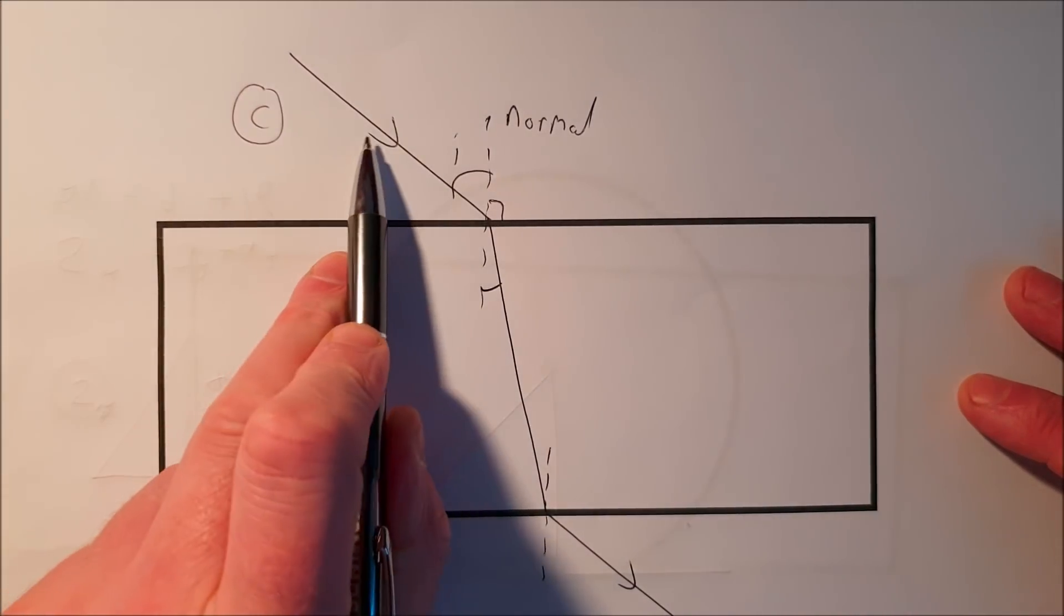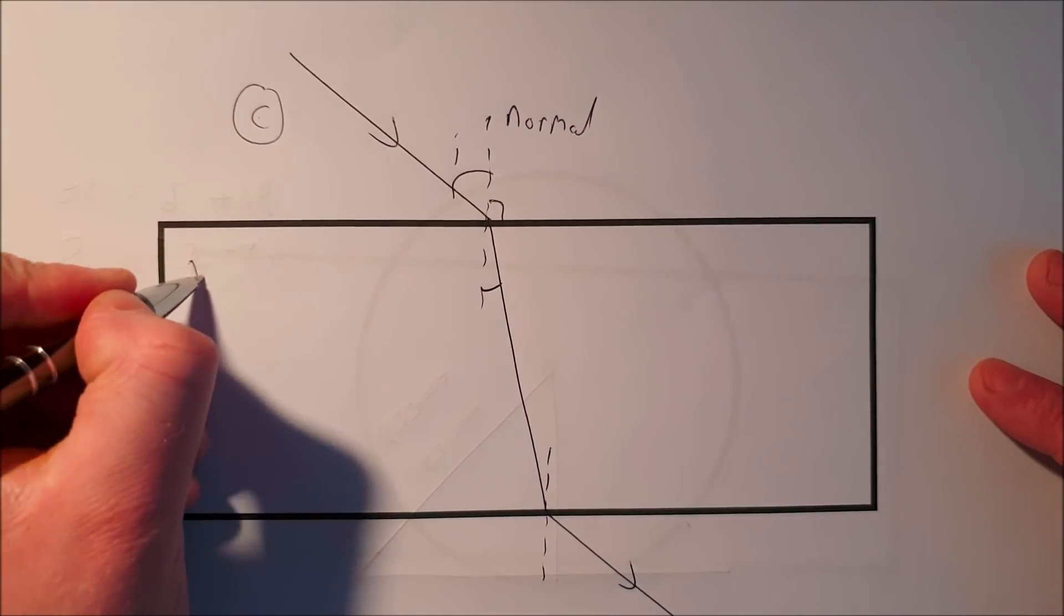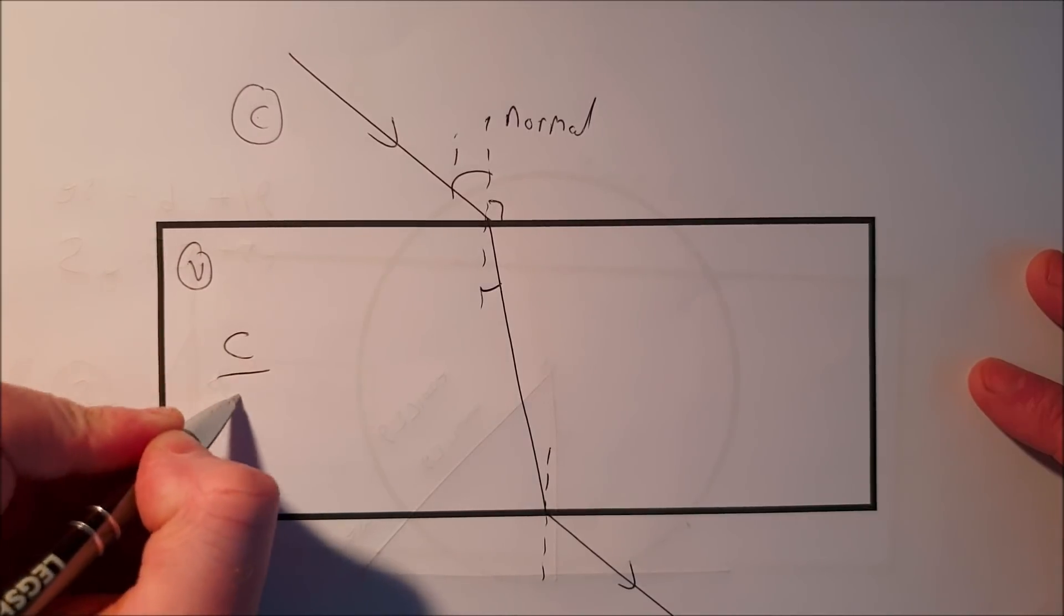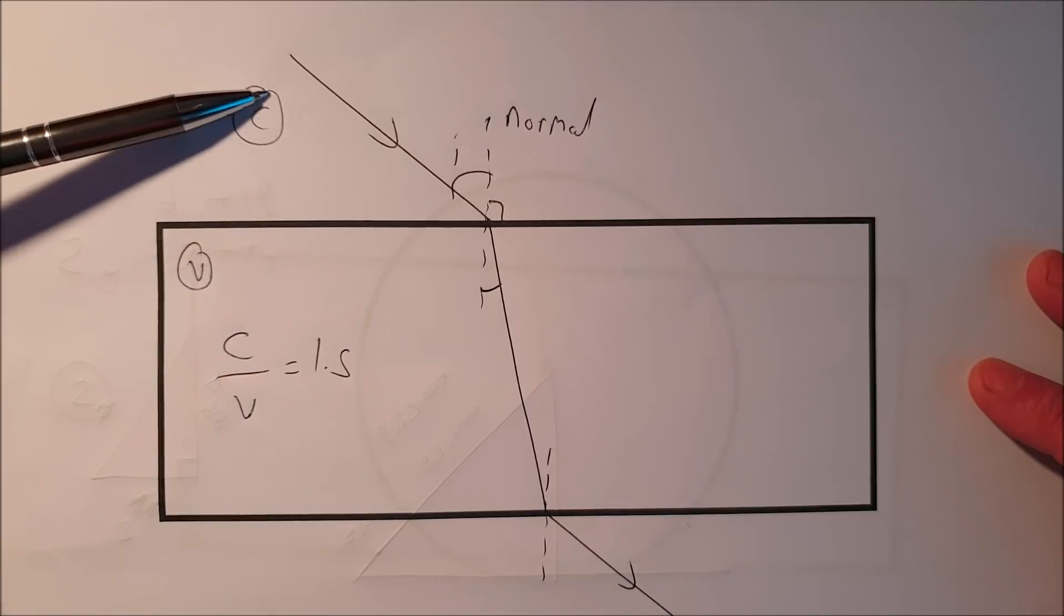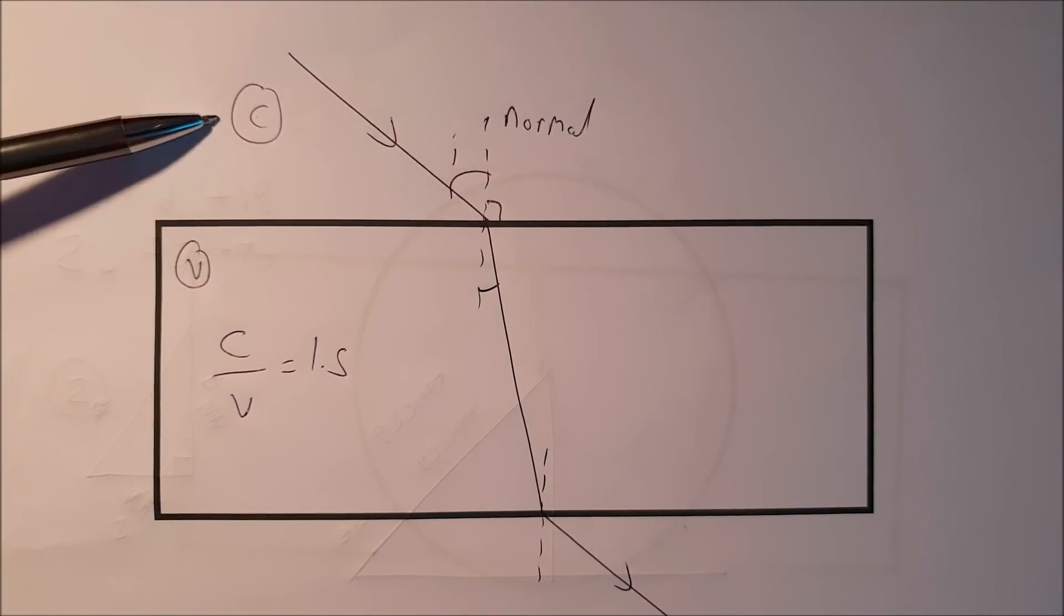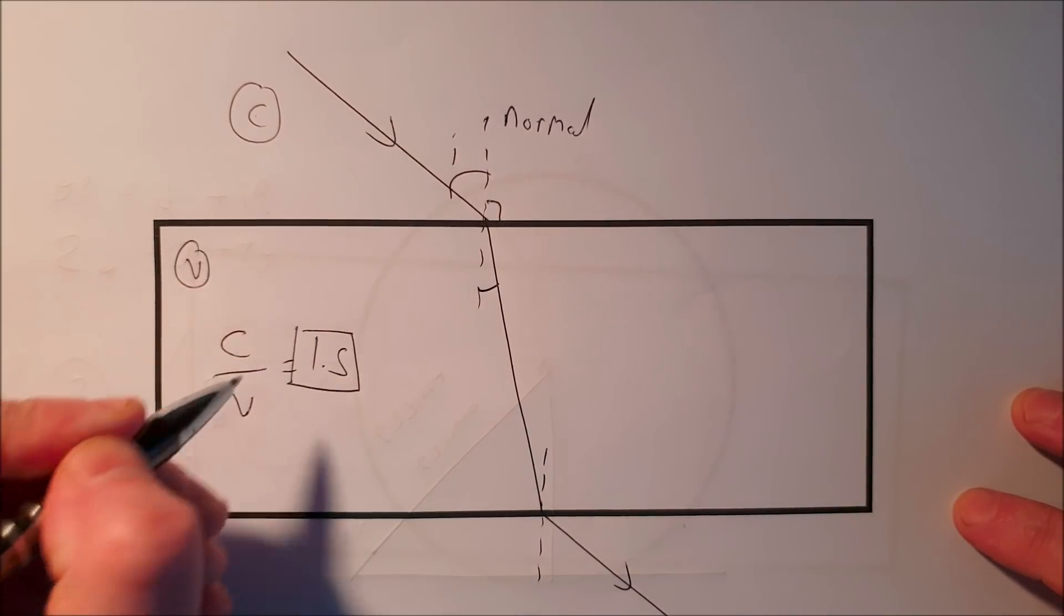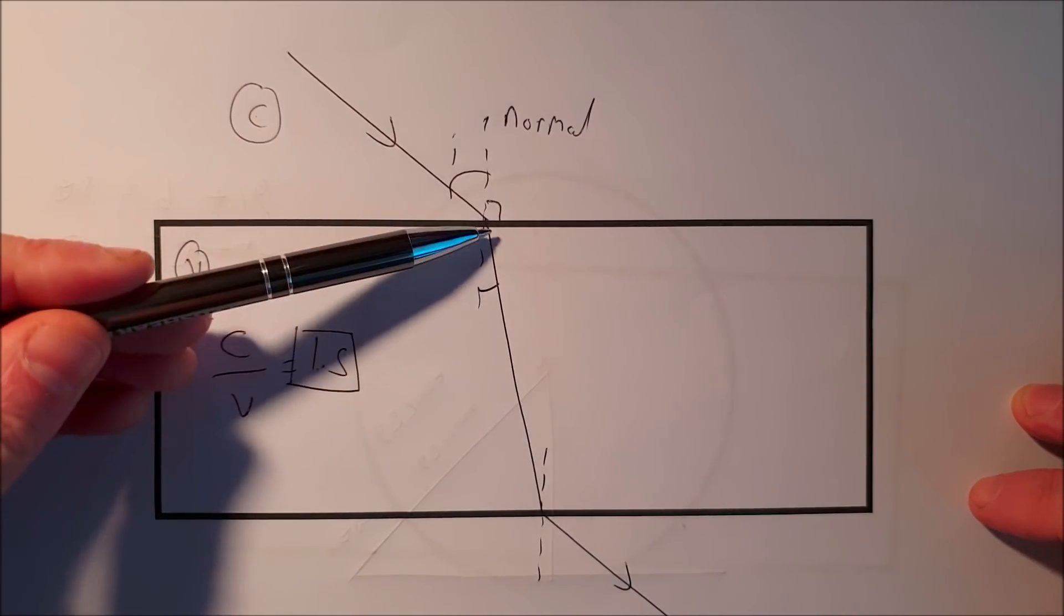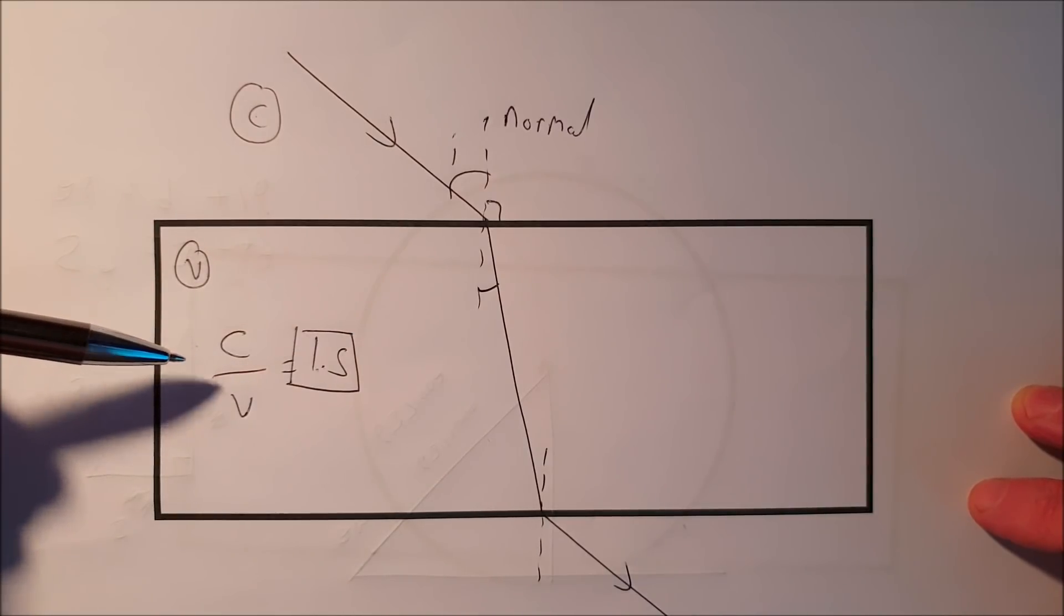If I measure the speed of light in air, which is very similar to a vacuum, I'll give it the letter C. If I measure the speed of light in the glass, I'll give it the letter V. If I take a ratio of C over V for glass, I get about 1.5. That tells me that light travels one and a half times faster in a vacuum or in air than it does in glass. This is what we call the refractive index of glass. The bigger that number is, the slower light travels through that medium.